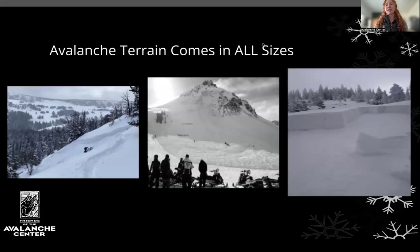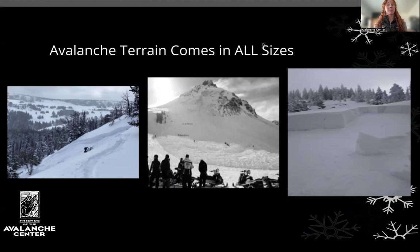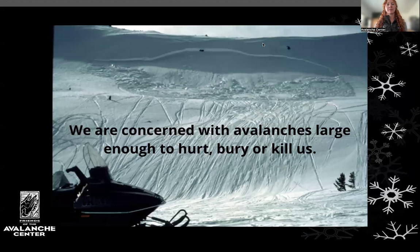Avalanche size — avalanches come in all shapes and sizes. They can be small tempered slopes, giant mountain faces, large paths, road cuts, or little gullies. You can increase the size of an avalanche by increasing its width or the depth of snow involved. It doesn't have to be a giant slope to have a large volume of snow if the snowpack is deep. What we're most concerned about are avalanches big enough to hurt, bury, or kill us. We're not that big as humans, so it really doesn't take that large an avalanche to increase the consequences of a negative outcome.